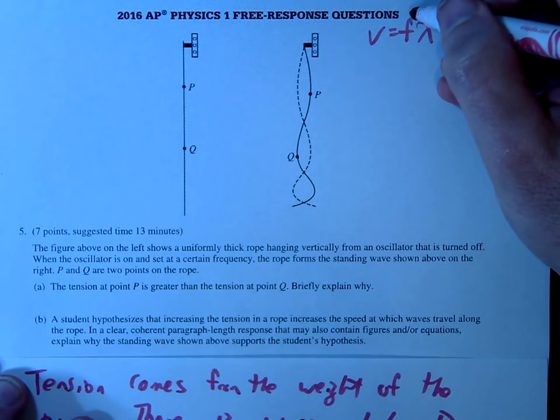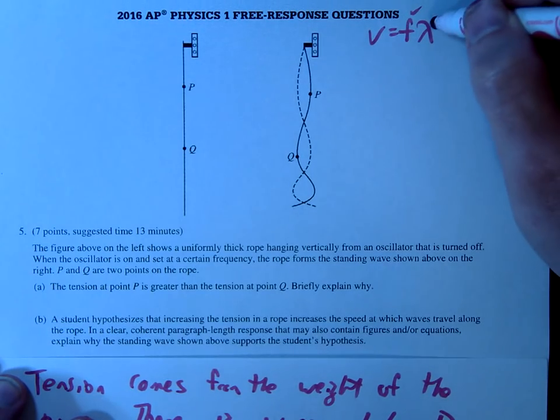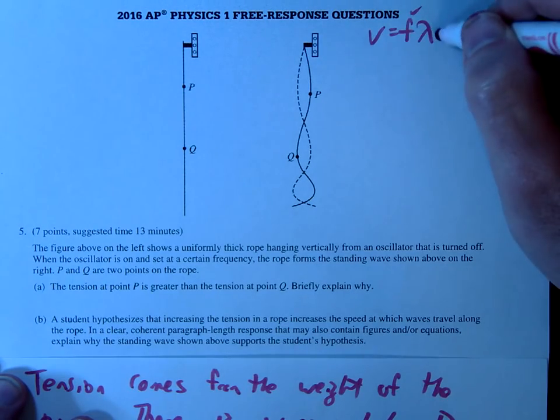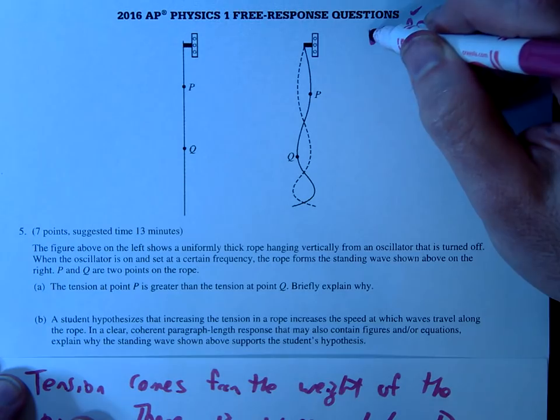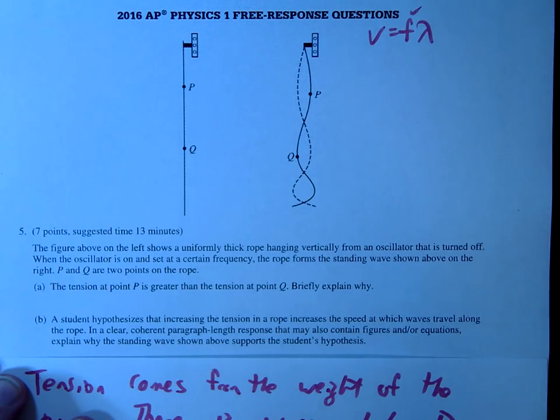So notice that the frequency is the same, right? It's the same oscillator. And so if we can show that the wavelength is longer when the velocity, so if the wavelength goes up, the velocity goes up, and if the velocity goes up, if we can show that the tension is also higher, then that tells us, that proves it.